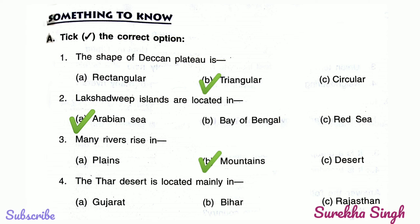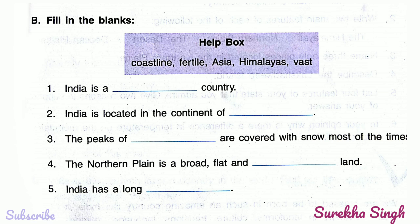Question 4: The Thar Desert is located mainly in Gujarat, Bihar, or Rajasthan. Option C — Rajasthan. The Thar Desert is mainly located in Rajasthan.